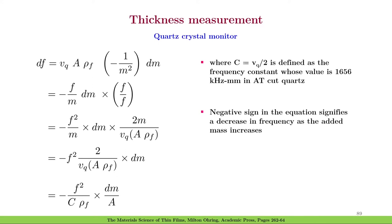The negative sign in this equation signifies an increase in the frequency as the added mass increases. We see that df is directly proportional to f square. This indicates that higher sensitivity can be obtained for higher frequency.